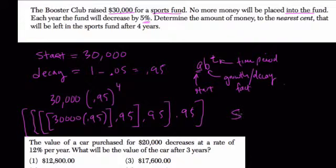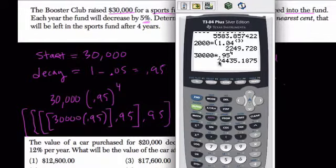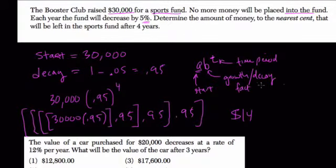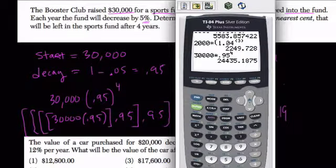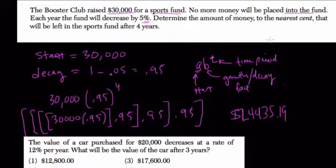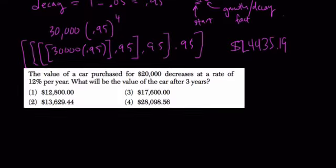24,435 and 19 cents, I believe that was. Yep, so that's the basic approach, is that you take your starting value and just multiply it by that factor over and over again.